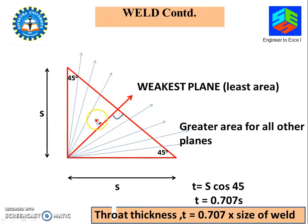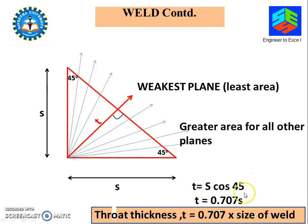How do you find out t, the throat thickness? If you know the size of the weld, since the angles are both 45 degrees, t is nothing but S × cos 45. Cos 45 is 0.707, or we can roughly take 0.7 — no problem. So if you know the size of the weld, the throat thickness can be found by: t = 0.707 × size of the weld.